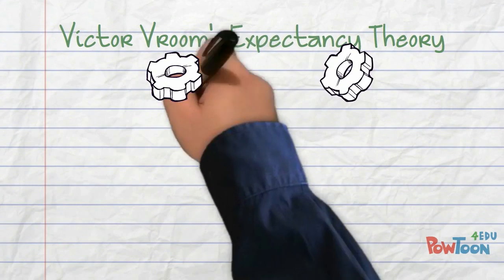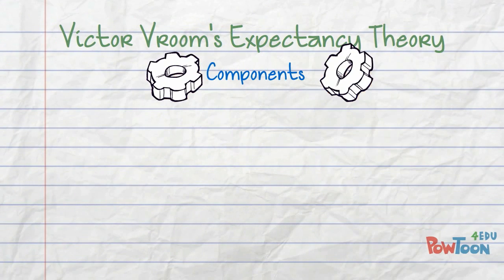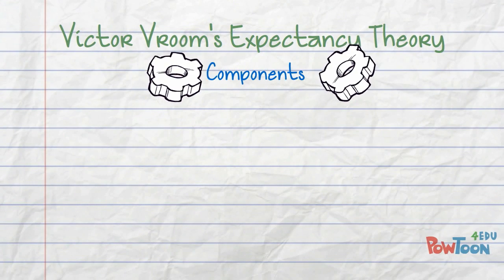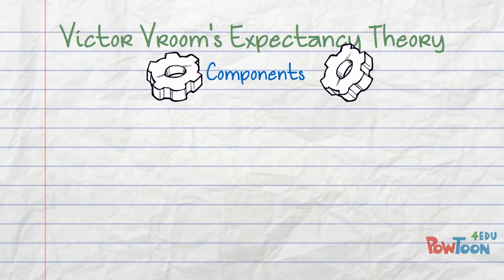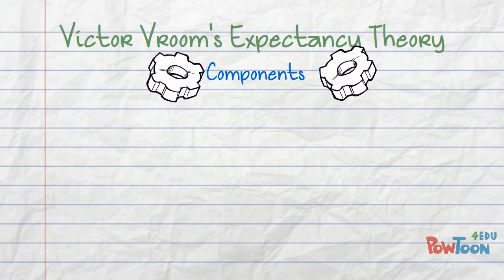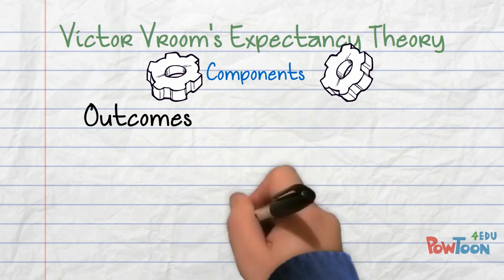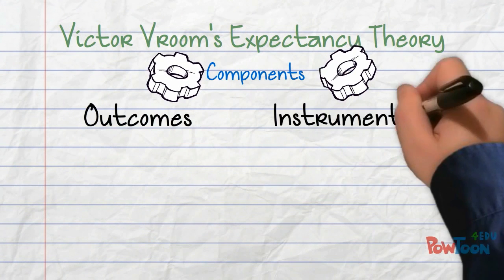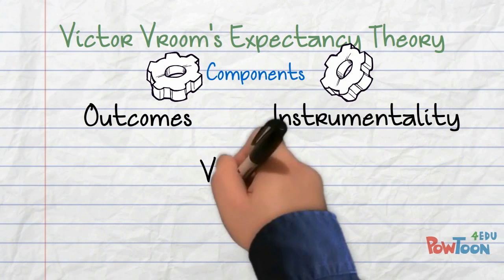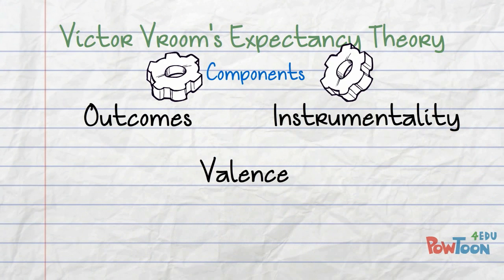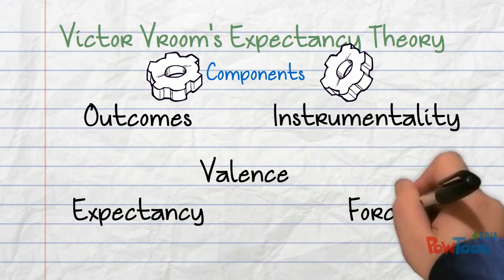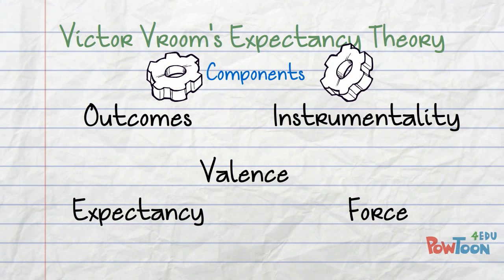The basic components of Victor Vroom's Expectancy Theory are outcomes, instrumentality, valence, expectancy, and force. We will describe and examine each of these components using an example.